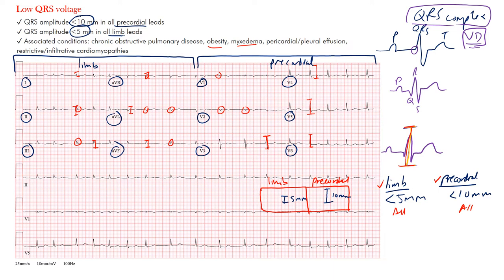Most commonly we see this with lung conditions such as COPD, obesity, and effusions — particularly pericardial effusion, where so much fluid in the pericardial sac prevents pickup of those signals. Restrictive or infiltrative cardiomyopathies can also cause it. To summarize: low QRS voltage in the limb leads is less than five millimeters in all those leads, and in the precordial leads less than ten millimeters in all those leads.